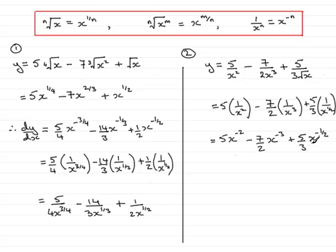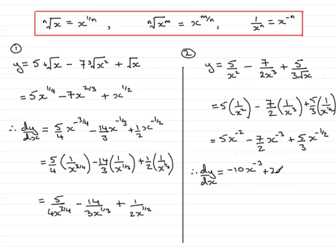Each of these terms is now in the form ax to the power n, so I can now differentiate. dy by dx equals: in the usual way, 5 times minus 2 is minus 10, and then subtract 1 from the power, x to the minus 3. For this one we get plus 21 over 2. Reduce the power by 1, so that's x to the minus 4. And for this one we have minus 5 over 6. Reduce the power by 1, so that's x to the minus 3 over 2.